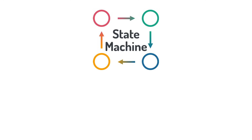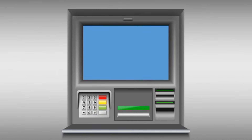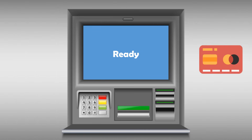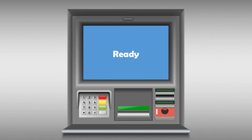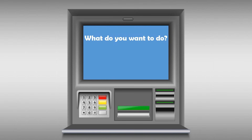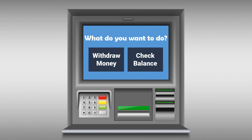Let's first take this example as an introduction for state machines. Assume we have an ATM and we want to withdraw money. First when we want to use the ATM, the ATM has the status 'ready' — the machine is ready and we can start doing something. First thing we have to do is to put the card in the ATM. Once you put your card, the machine changes the status from ready to a new status — a menu where you can choose what you want to do. Assume we only have two options: withdraw money and check balance.